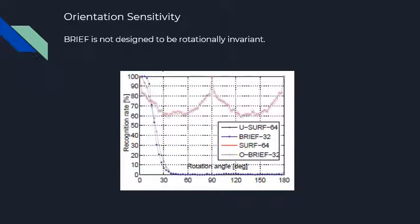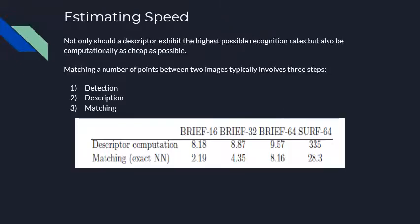Since BRIEF is orientation variant, let's look at its orientation sensitivity. It can tolerate small amounts of rotation. Up to 10 to 15 degrees there is little degradation, followed by a massive drop. SURF, which attempts to compensate for orientation changes, does better for large rotations but worse for small ones — highlighting once again that orientation invariance comes at a cost.